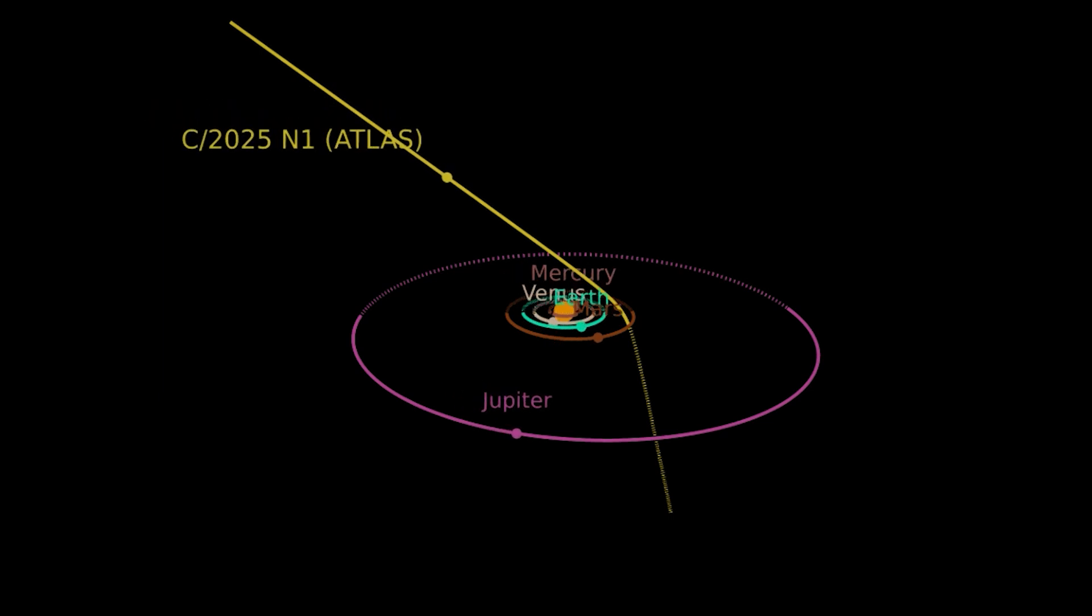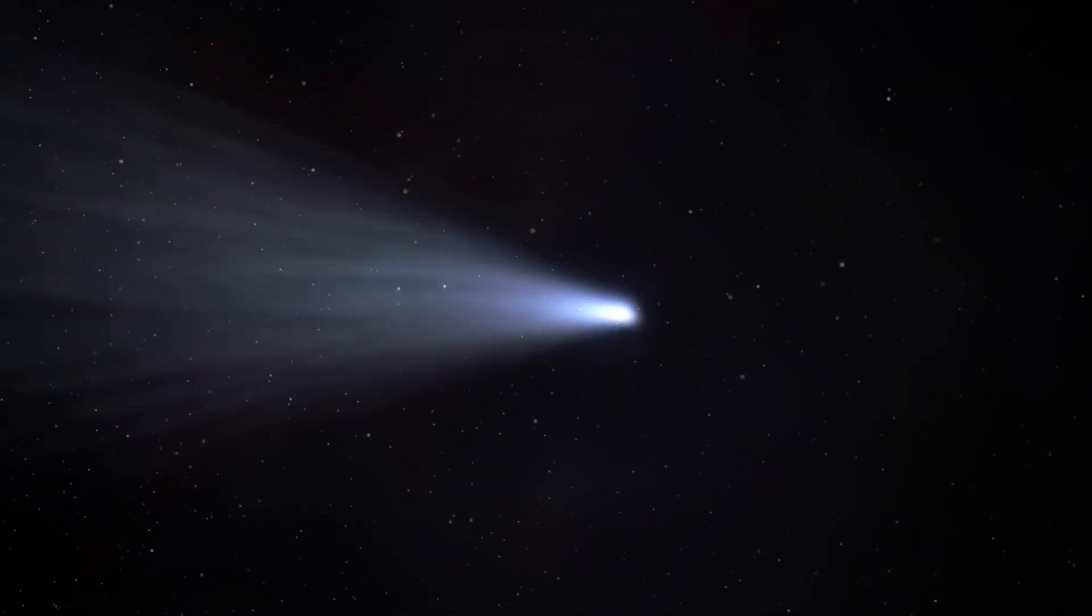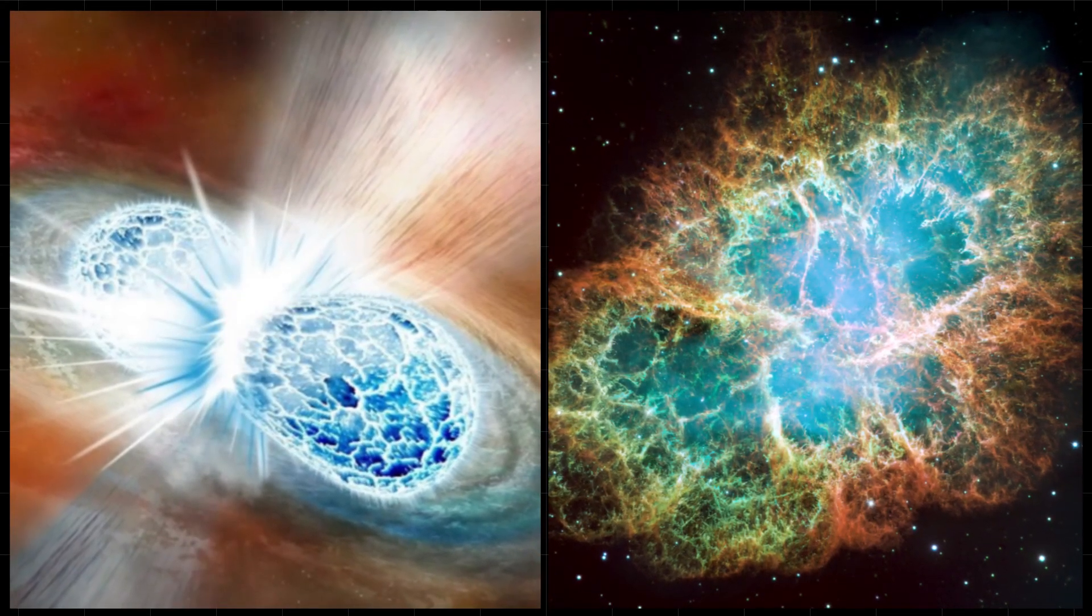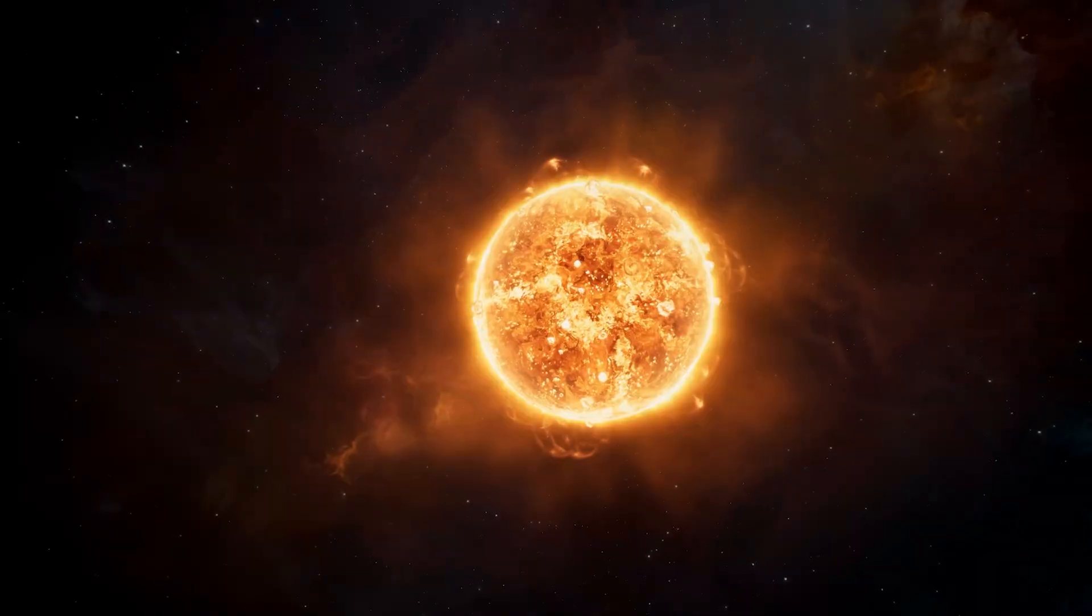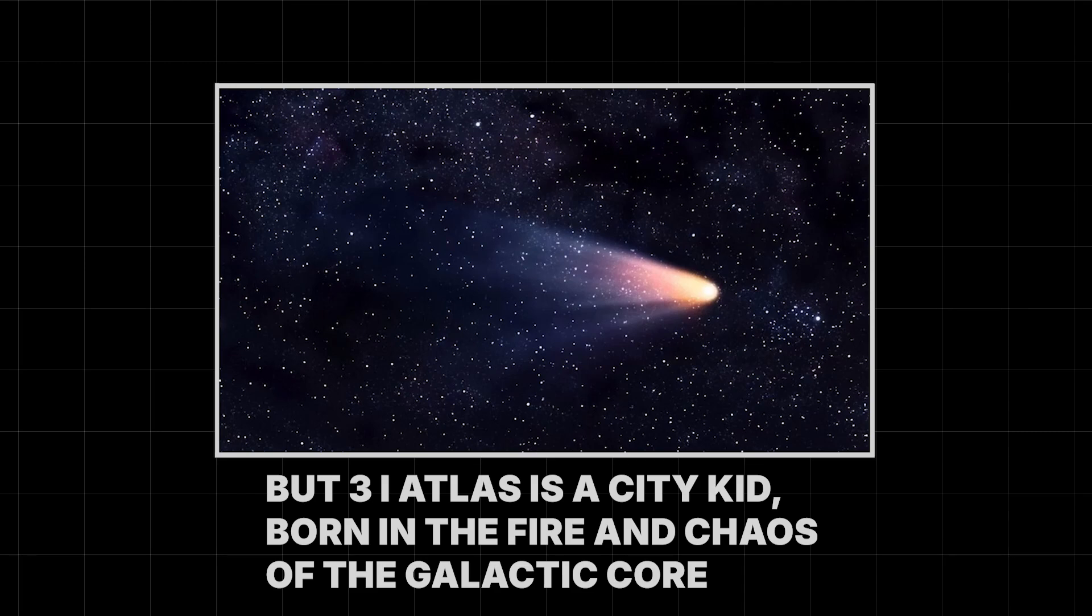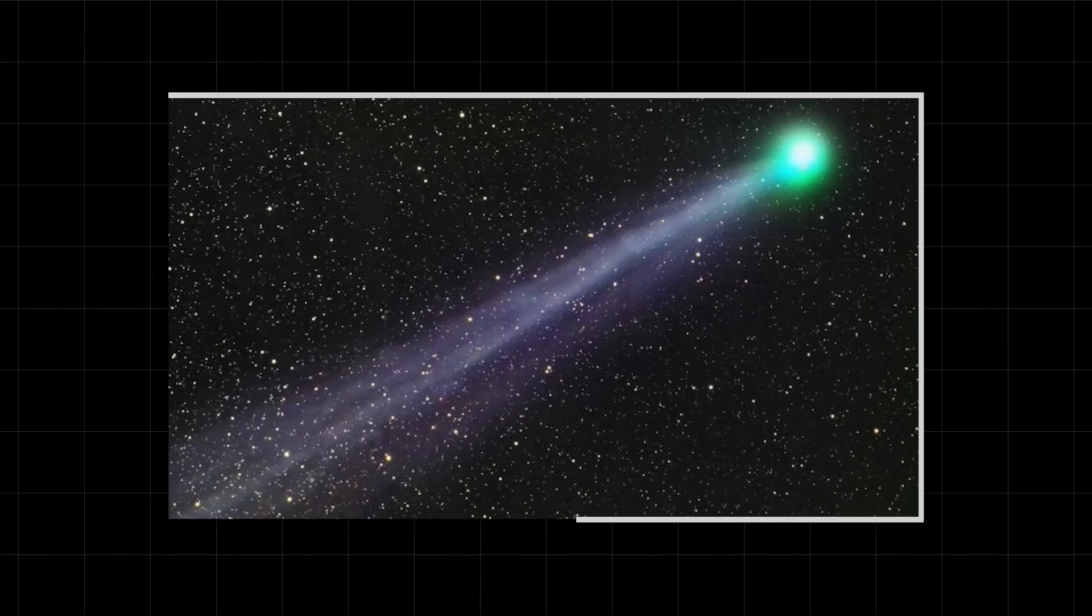What people don't notice is that the trajectory of 3i Atlas is another piece of the puzzle. It came from the direction of the galactic center, a place where stars are packed much more closely together. The chances of extreme events like kilonovas and supernovas are much higher in that dense, chaotic environment. It's like the rough neighborhood of the galaxy. Our sun is out in the quiet suburbs, but 3i Atlas is a city kid, born in the fire and chaos of the galactic core. It is a messenger, and it's bringing us news from a part of the universe we are only just beginning to understand. It's telling us that the galaxy is a far more violent and far more interesting place than we ever knew.